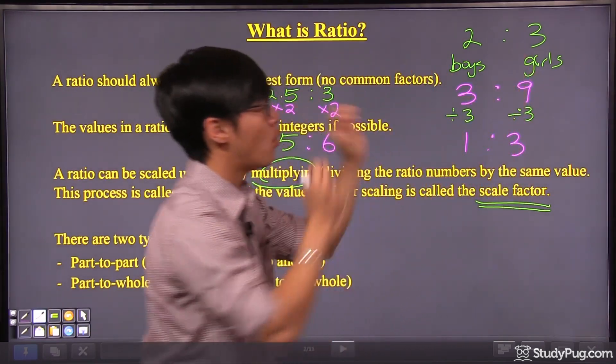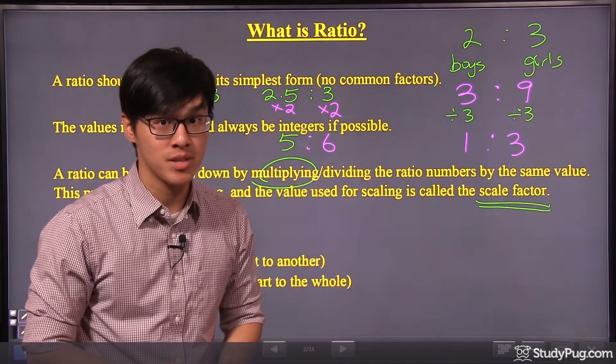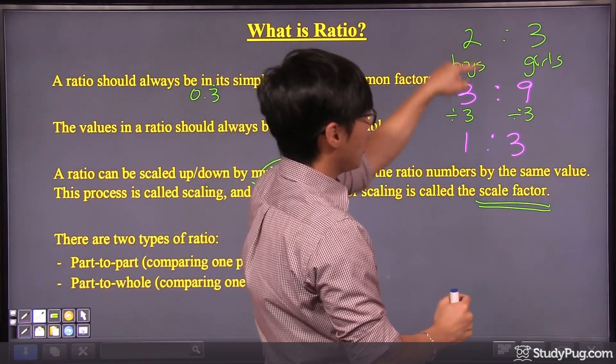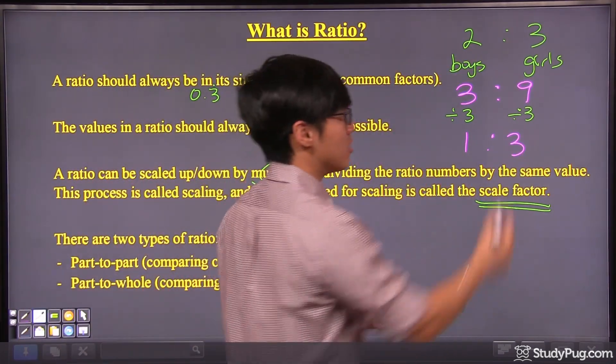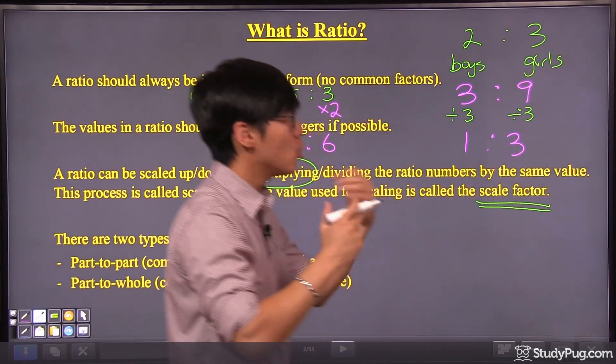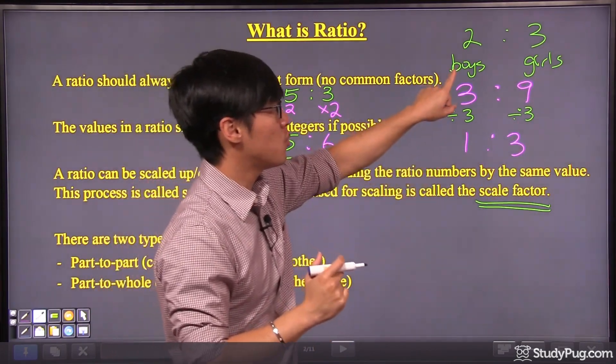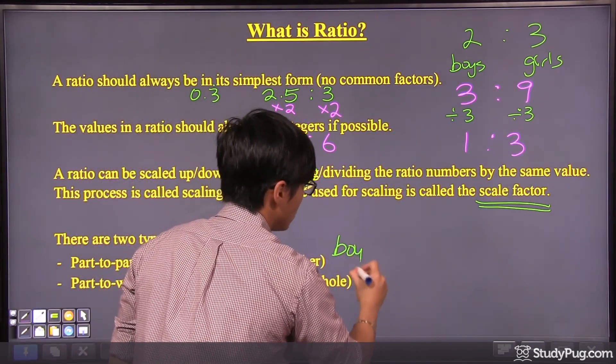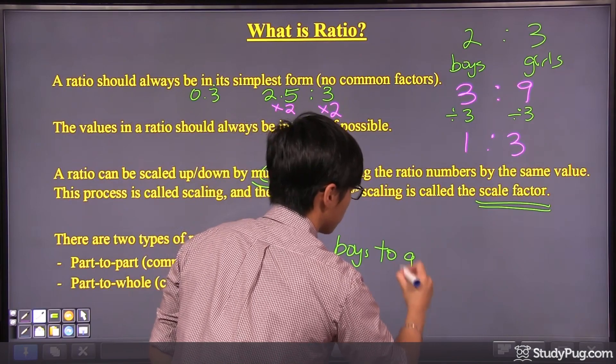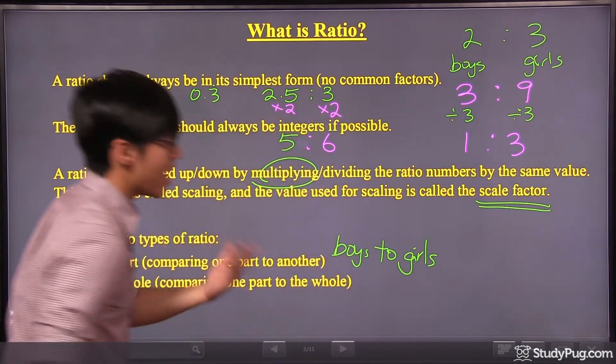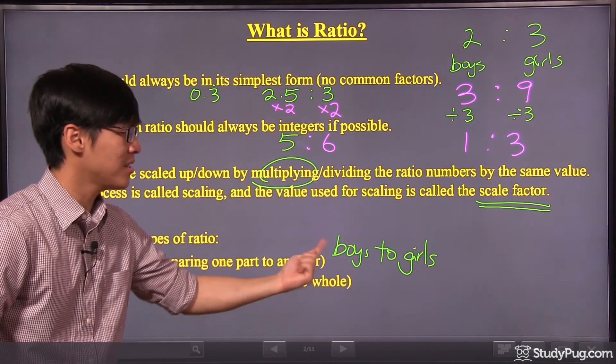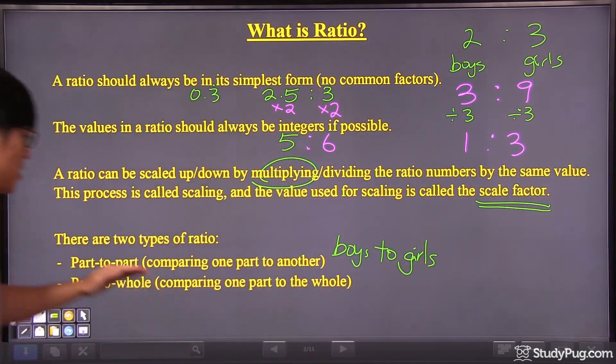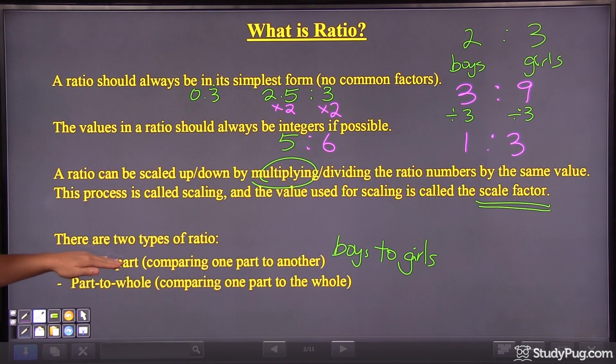I was talking about the boys and girls in the classroom setting. So boys is part of the class, and so is the girls. Girls is part of the class. So if we're comparing between boys and girls, if we're comparing boys to girls, we are actually comparing part of the class to part of the class. So that's why it's called part-to-part.